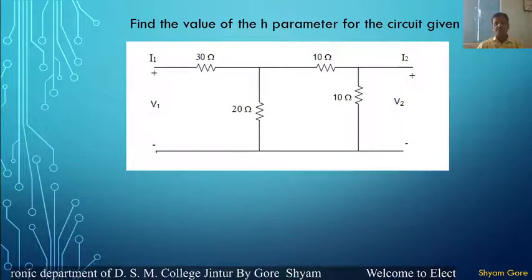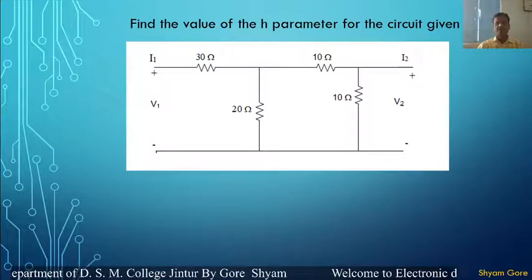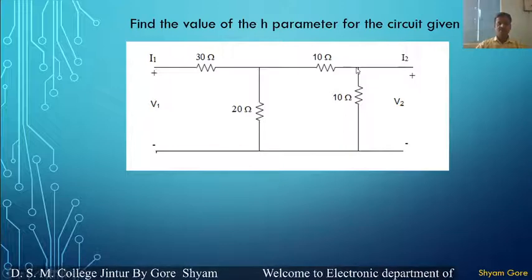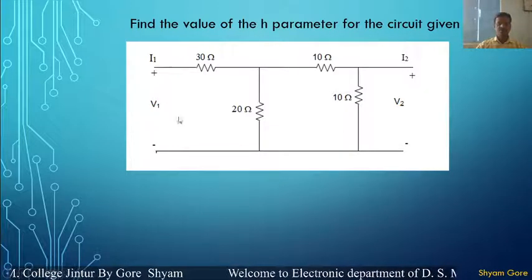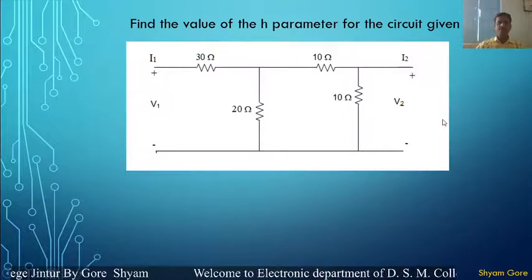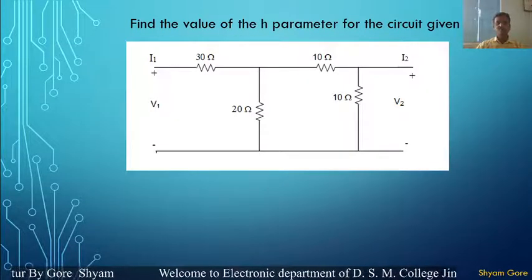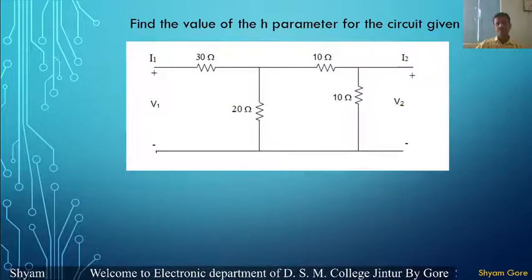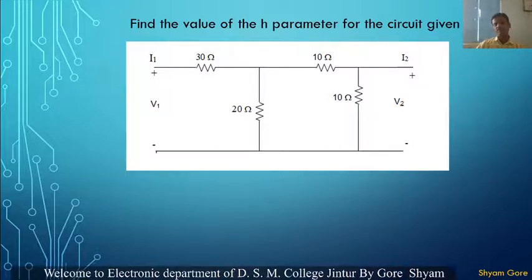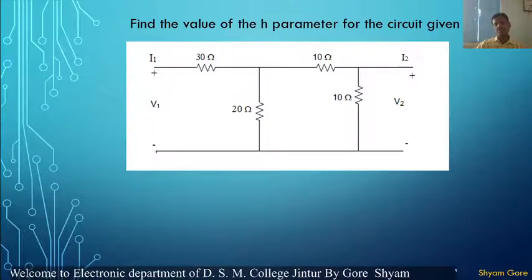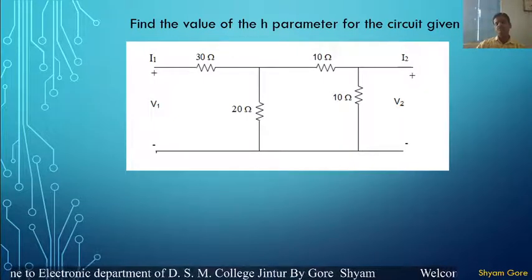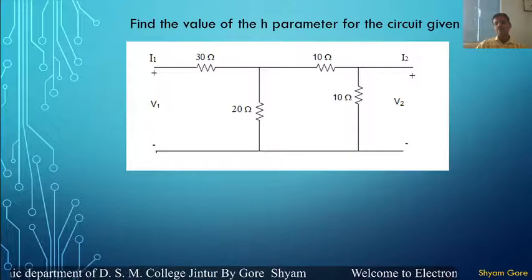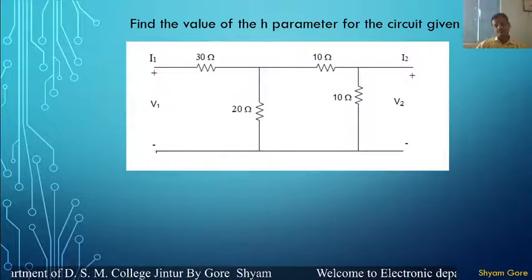Here the circuit is given. In this circuit the four resistances are connected, which having the two ports — this is the input port, this is the output port. Here we have to find out the value of H parameter of this circuit. The H parameters are the input impedance, reverse voltage gain, forward current gain, and the output admittance for the circuit.